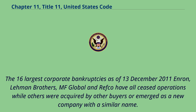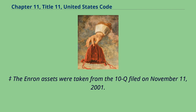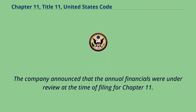The 16 largest corporate bankruptcies as of December 13, 2011 include Enron, Lehman Brothers, MF Global, and Refco, which have all ceased operations, while others were acquired by other buyers or emerged as a new company with a similar name. The Enron assets were taken from the 10-Q filed on November 11, 2001. The company announced that the annual financials were under review at the time of filing for Chapter 11.